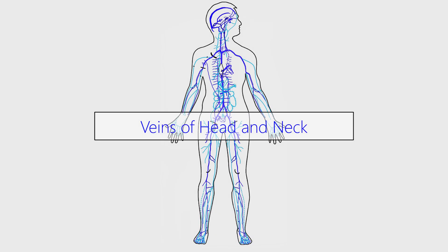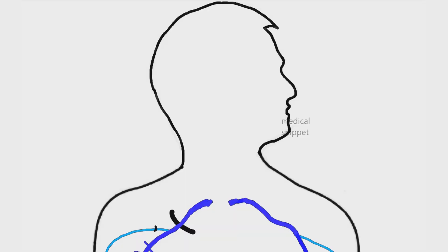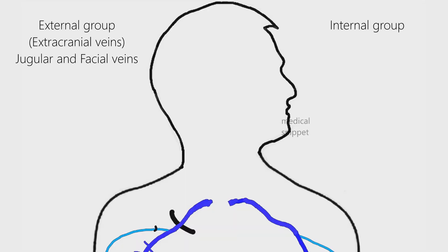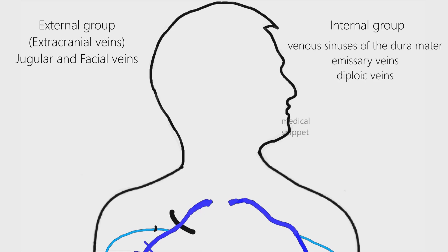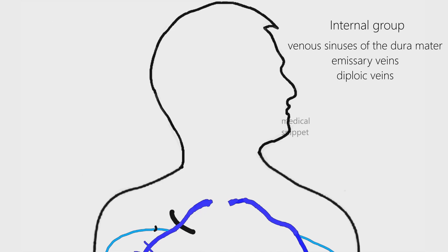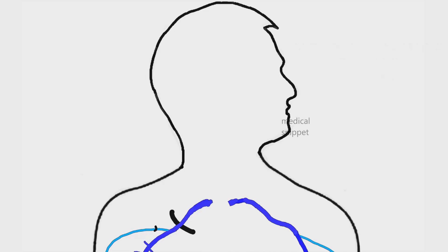Now let's discuss the venous system of the head and neck. Veins of the head and neck can be grouped into external and internal groups. The internal group consists of venous sinuses of the dura mater, emissary veins, and diploic veins. Emissary veins are valveless venous channels that connect the venous sinuses of the dura mater to the extracranial venous systems. Diploic veins are intraosseous venous channels present in the cancellous bone of the skull. Let's discuss venous sinuses of the dura mater in detail. They can be classified into paired and unpaired groups as shown.